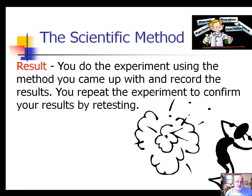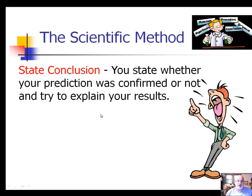For the result: you do the experiment using the method you came up with, record the results, and repeat the experiment at least three times. Then you let other people try to do it — if they can validate your data based on your experimentation, you probably have a good test. Then you state a conclusion on whether or not your prediction was confirmed. You let others look at the results, retest it, and find out the same results. If you can do that, you've done the experiment correctly. If you can't, you have to go back and look at your processes again.